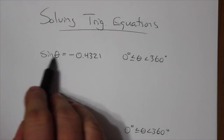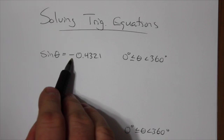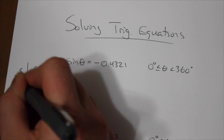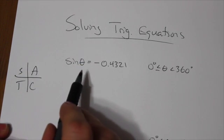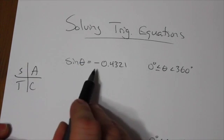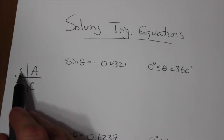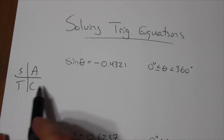Here's the trig function, it is equal to a negative value. So now we've got to think, according to our CAST rule, what quadrants is the sine ratio negative in? Since all of them are positive here and sine is positive here, that has to be quadrants three and four.